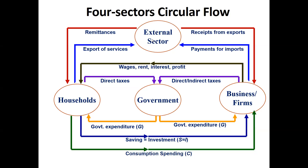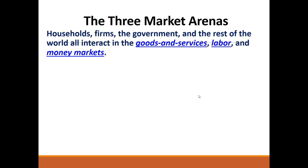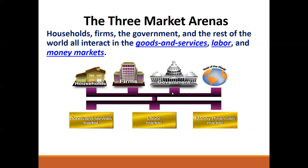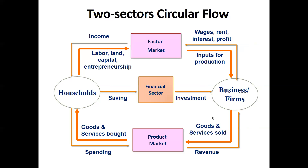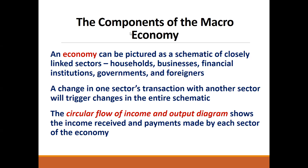So this is the four-sector economy: external sector, government, business firms, and household. I hope this video is clear. All three sectors — two-sector, three-sector, and four-sector circular flow — are clear. In the next video we will discuss more concepts: three market arenas where household, firms, government, and the rest of the world all interact in the goods and services market, labor market, and money/financial market. Keep watching, stay tuned. Thank you.